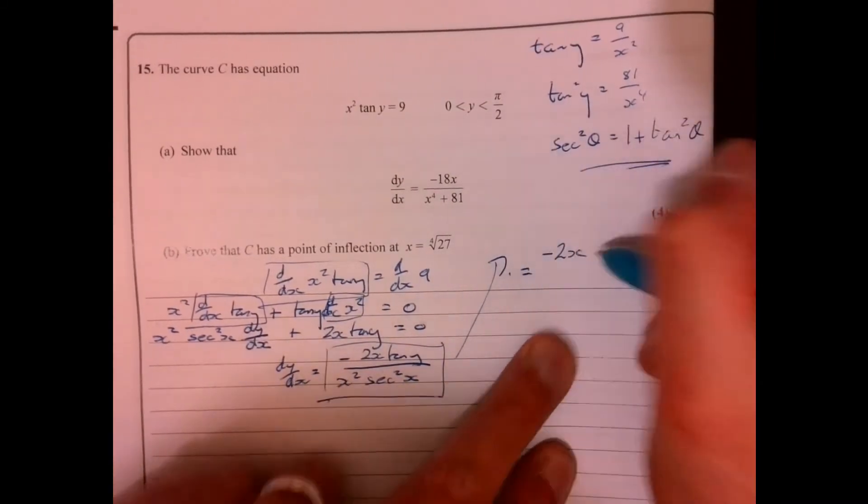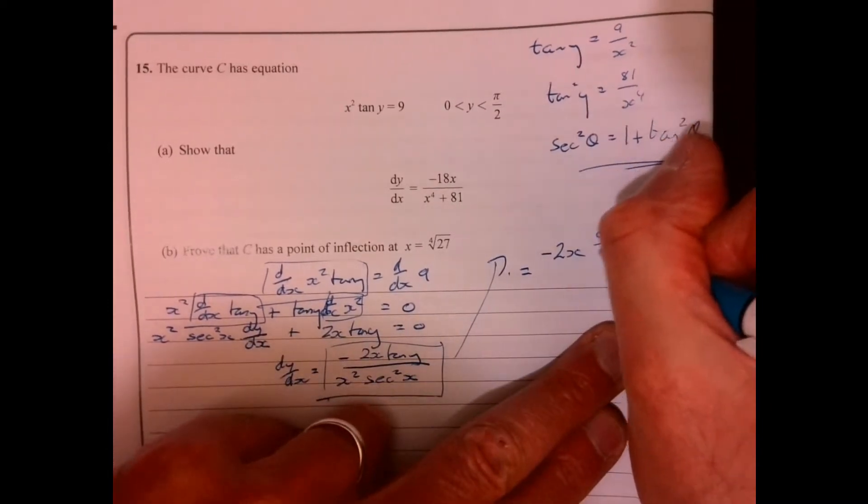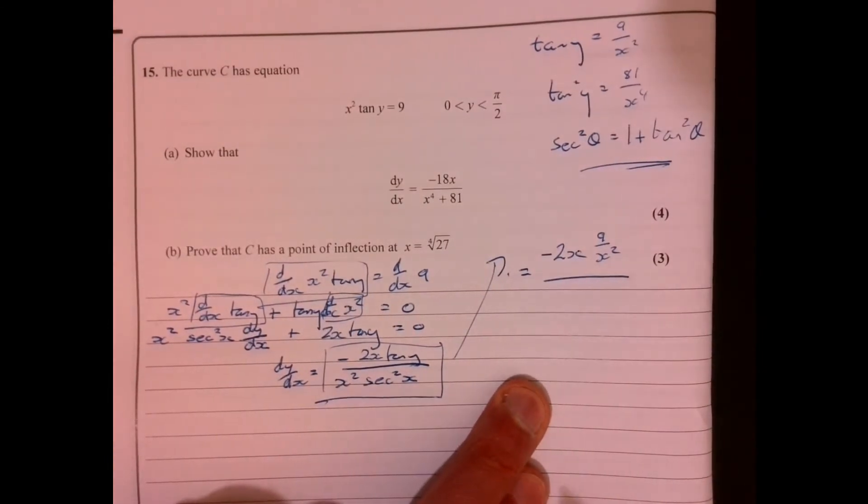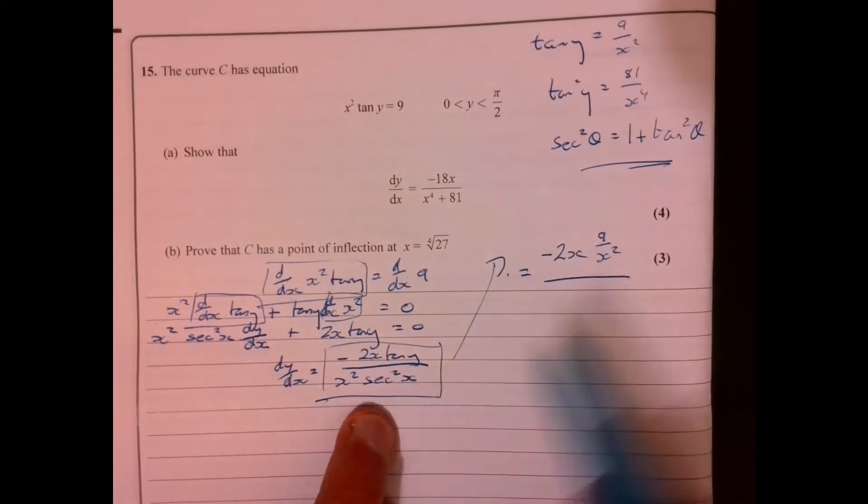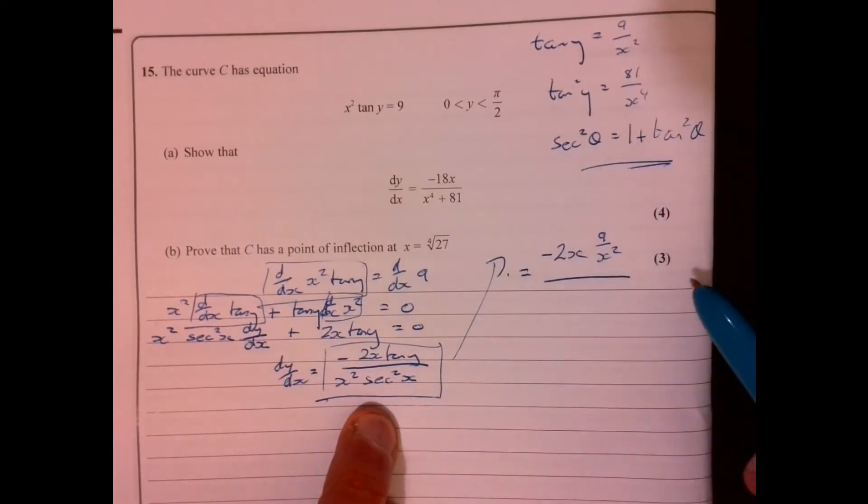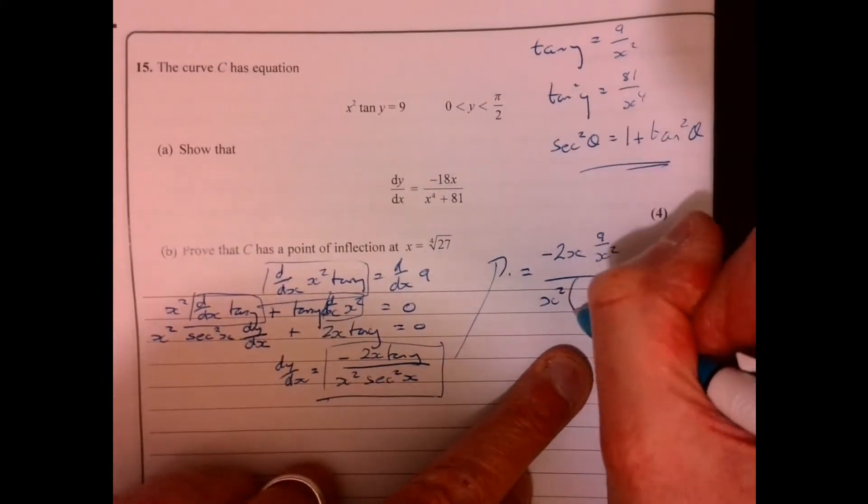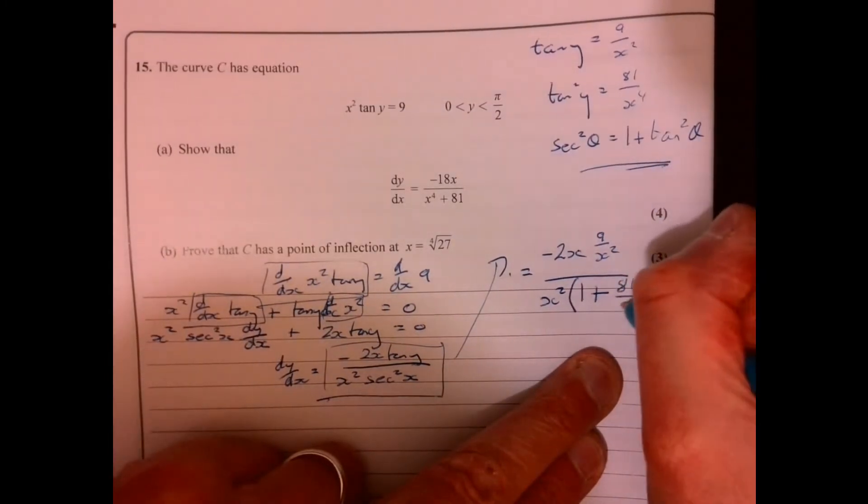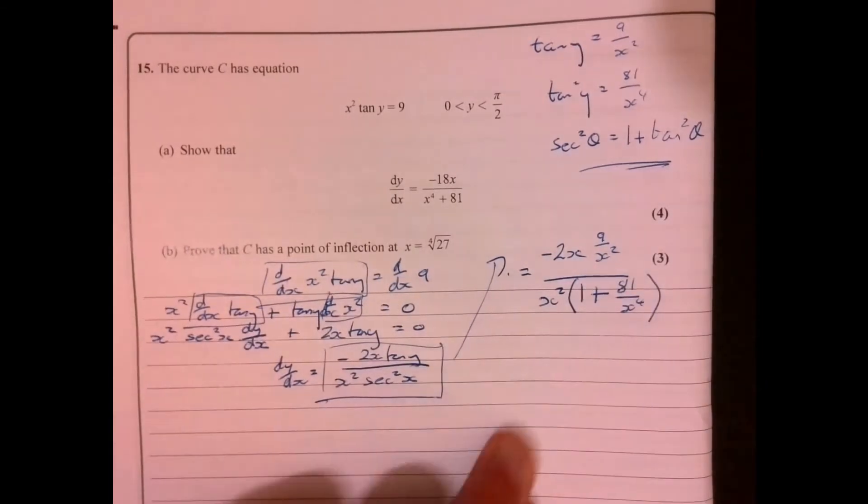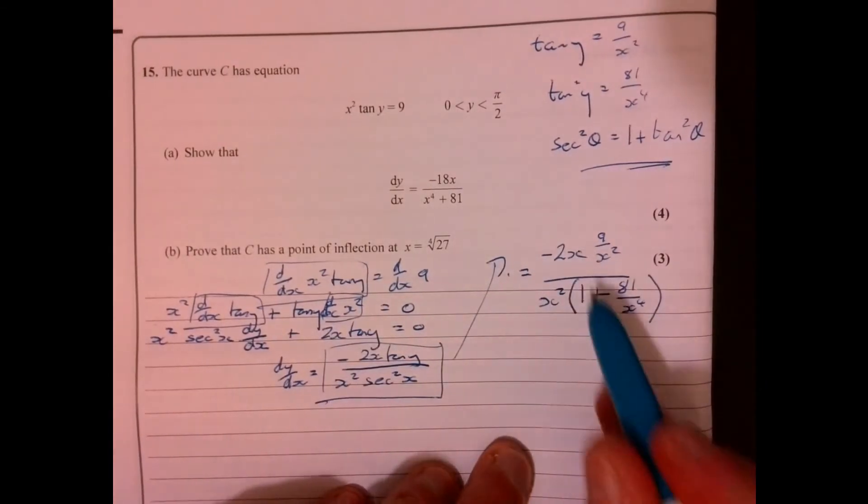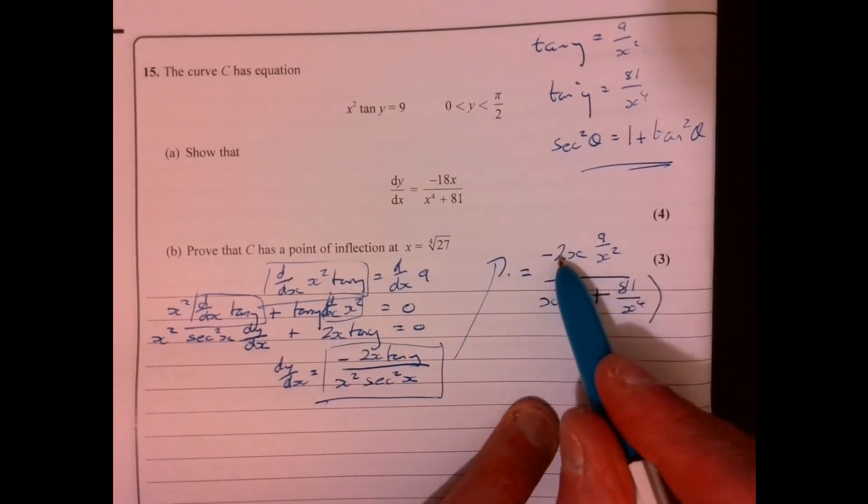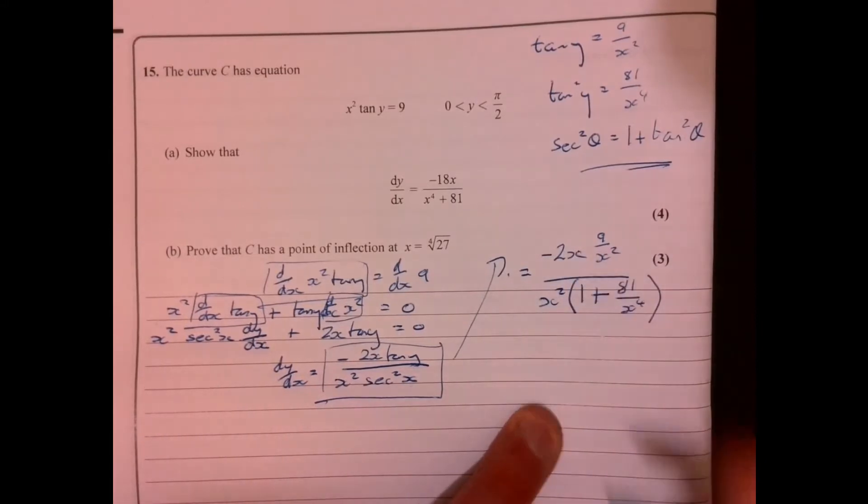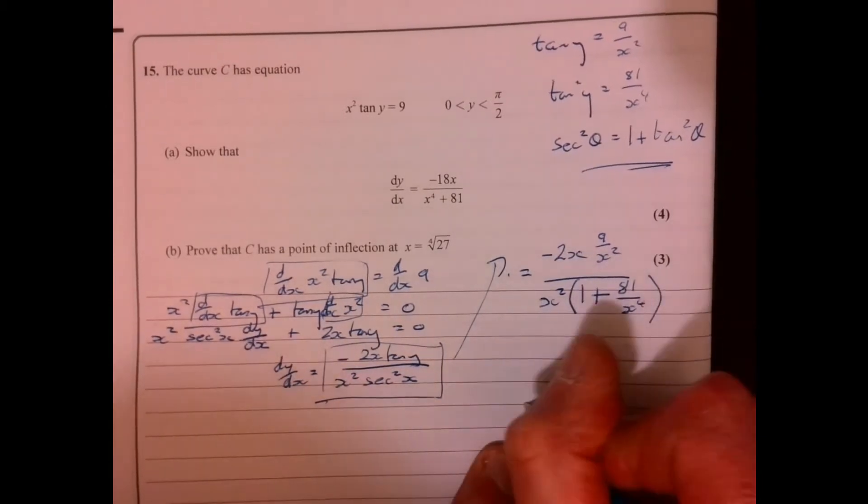We've got minus 2x. Now we've got tan y. So I'm just going to substitute it. Tan y is 9 over x squared. I'm not going to try and do anything with anything here. I'm just going to take one step at a time. Now, sec squared is 1 plus tan squared. So that's going to be x squared. And I've got 1 plus tan squared. So let's just substitute that in. Now, I'm just going to play around with this here a little bit. Well, let's look at the numerator first of all, because that's easier. We're going to have minus 18, and then the x is going to cancel. So that's going to give me minus 18 over x.